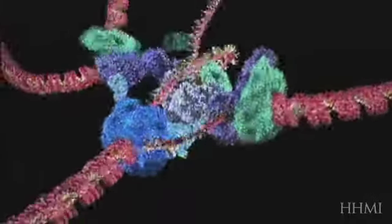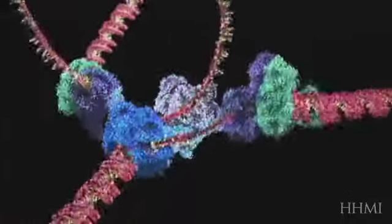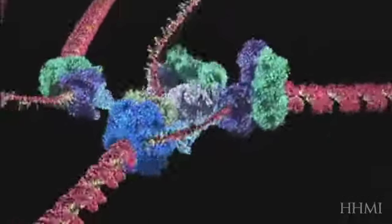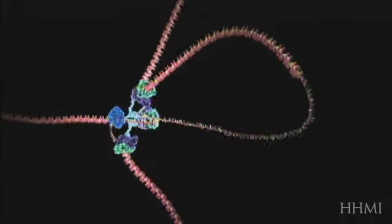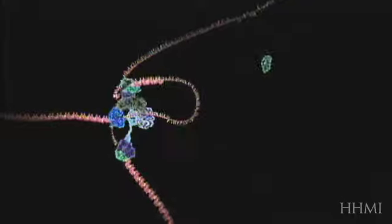Things are not so simple for the other strand because it must be copied backwards. It is drawn out repeatedly in loops and copied one section at a time.